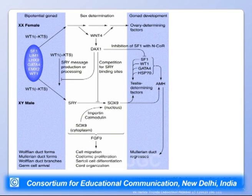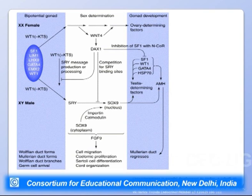In females, there is no SRY gene product. Instead, factors such as WNT4 and DAX1 are active. DAX1 inhibits SRY message production and also inhibits testis-determining factors such as SF1, WT1, and HSP70. Inhibition of testis-determining factors leads to ovary differentiation, enhancement of ovary-determining factors, and ultimately the development of female characteristics.